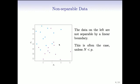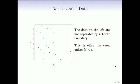Here's a similar picture to what we had before. In this case, the data aren't separable. You cannot fit a hyperplane through these data and exactly separate them. You can try as much as you like, but there's always going to be overlap. And this is often the case, especially if the number of points is large relative to the dimensions.